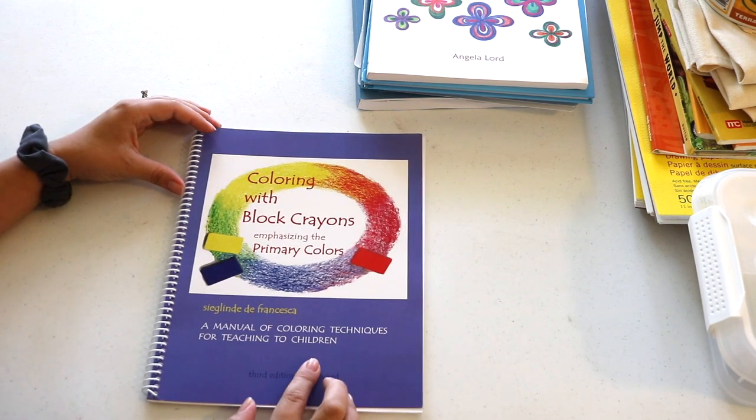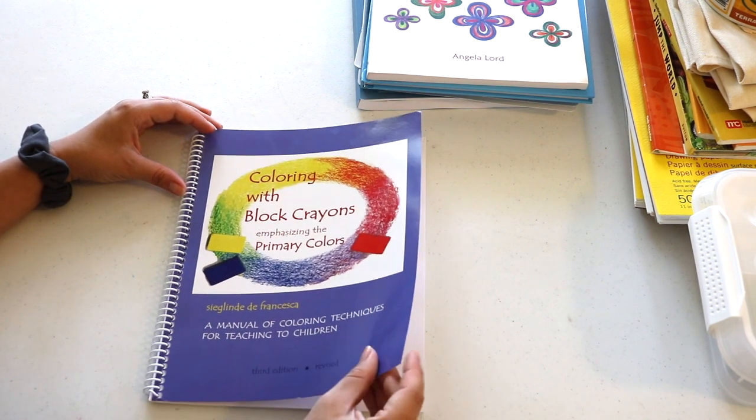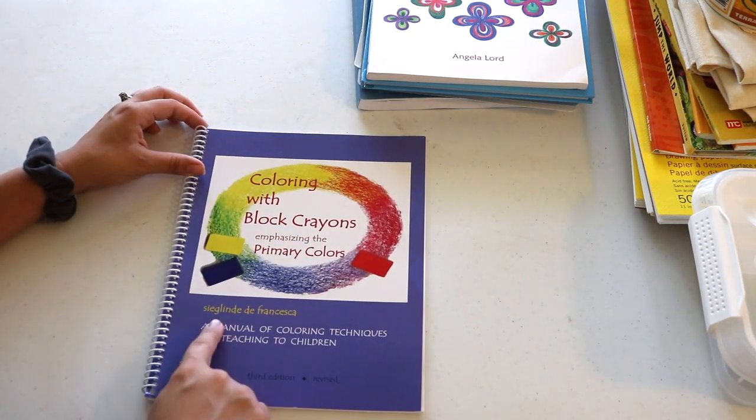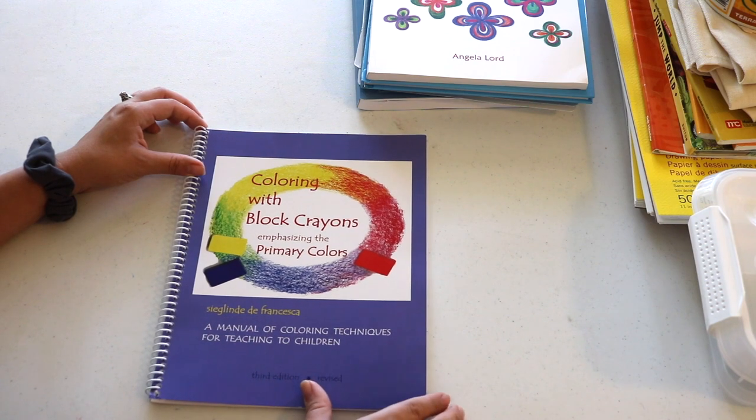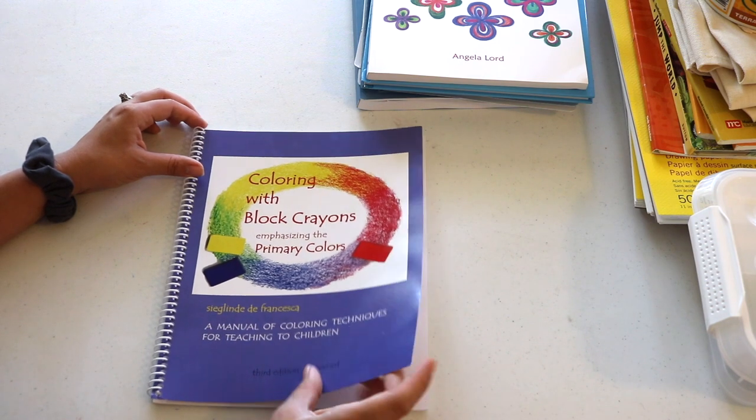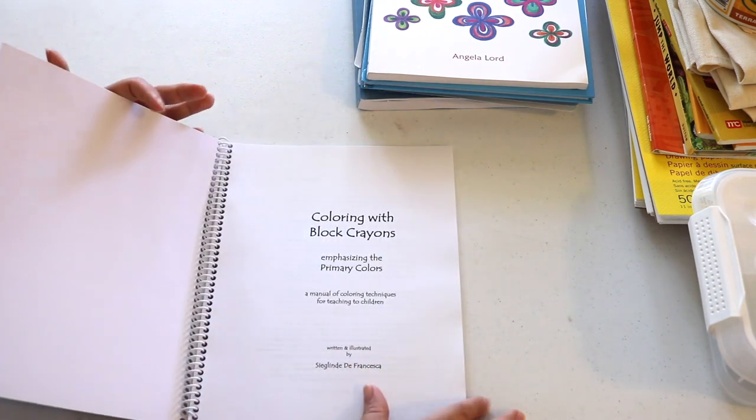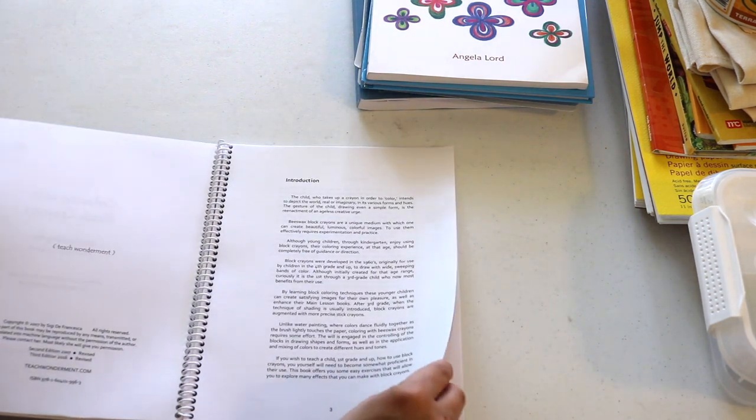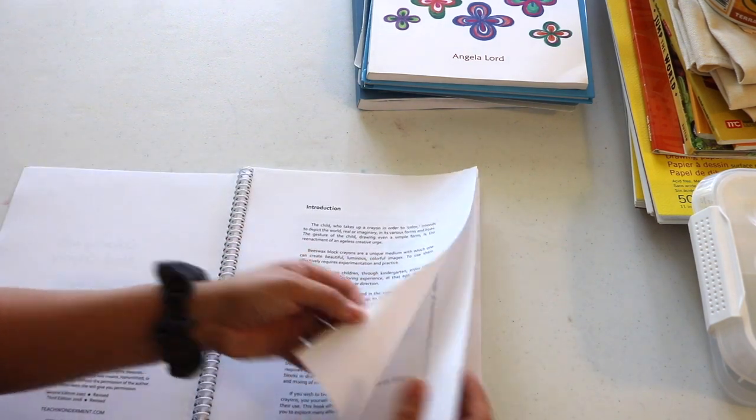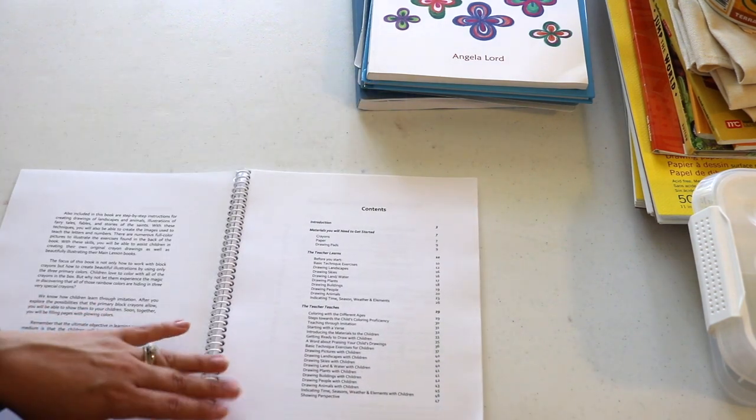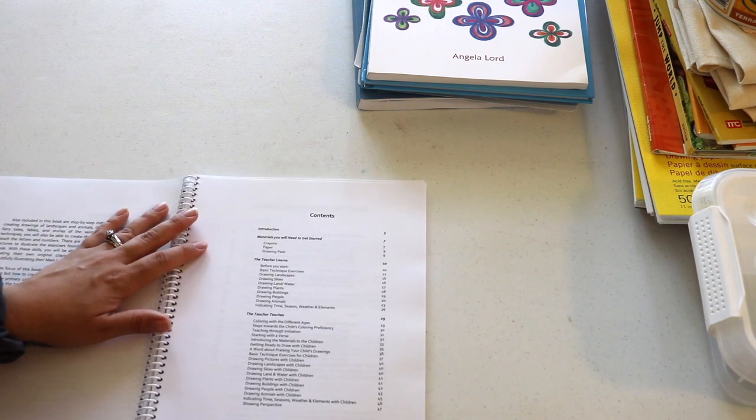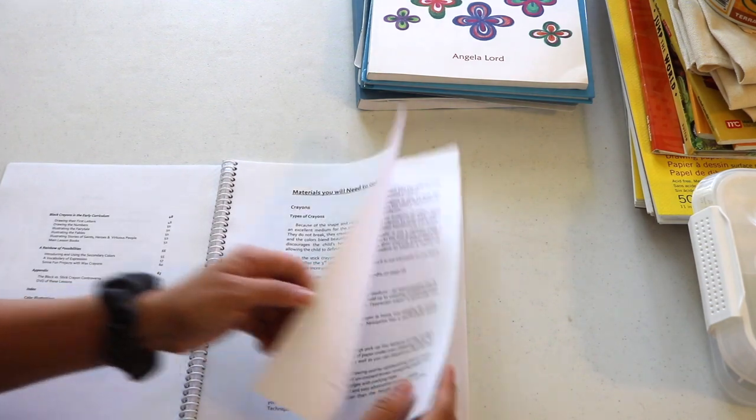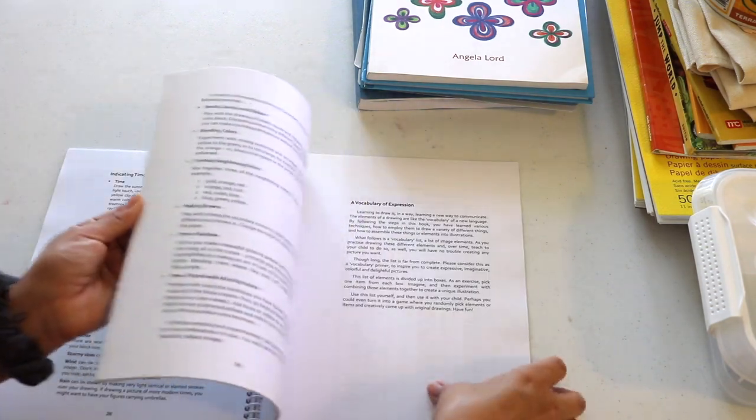I chose a few books for our art electives, so we will begin the school year with Coloring with Block Crayons. As you can see here, this is more of a manual for the teacher or the parent, not a workbook for the student to work out of. I've already read the intro and I've begun the parent lessons, and I'm liking it so far, but I will make a more in-depth review once we've been able to work our way through it more and I have some example work from my children to show you.